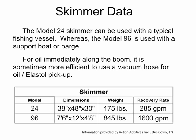These are examples of two sizes of skimmers. The Model 24 has a pickup rate of 285 gallons per minute. Its physical size would allow it to be used with a small fishing vessel. The Model 96 has a pickup rate of 1,600 gallons per minute. Because of its larger size and greater weight, a larger vessel would be necessary. For small spills, and for picking up oil immediately adjacent to the boom barrier, a vacuum hose is more efficient than a skimmer.